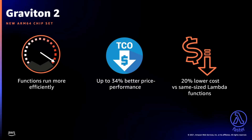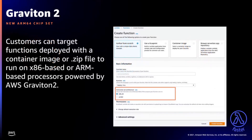With Lambda, you're charged based on the number of requests and the duration — the time it takes for your code to execute. For functions using Graviton 2, your code executes faster, resulting in 20% lower duration charges than x86 pricing. With the Graviton 2 release, you can target functions deployed with a container image or zip file to run on either x86 or ARM-based processors. You can create two versions of a function, distribute traffic between them, and measure performance metrics with Amazon CloudWatch.